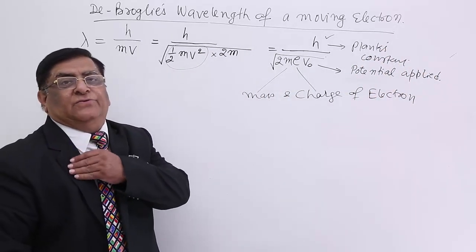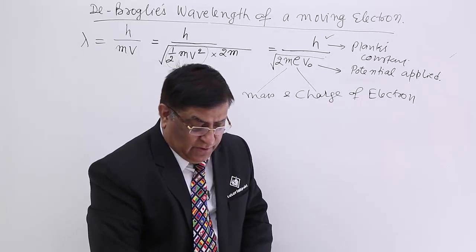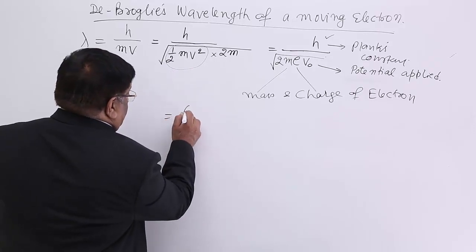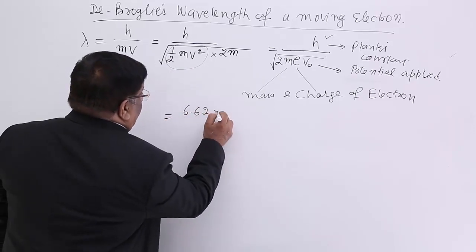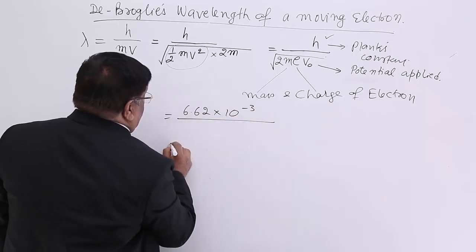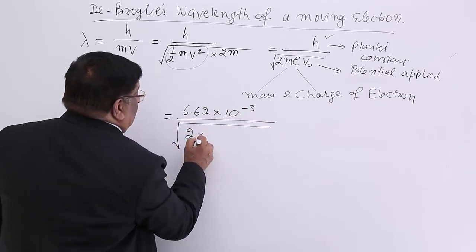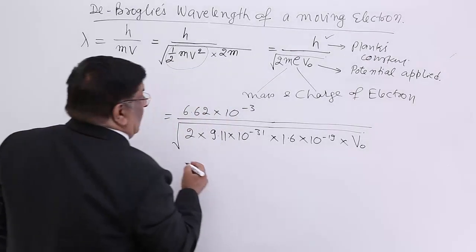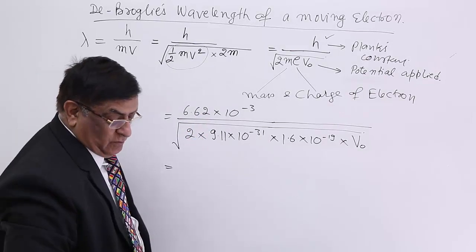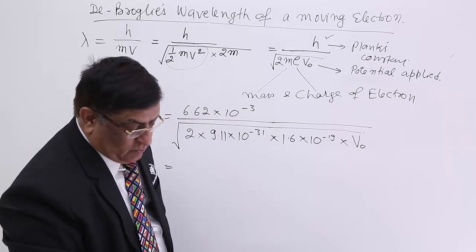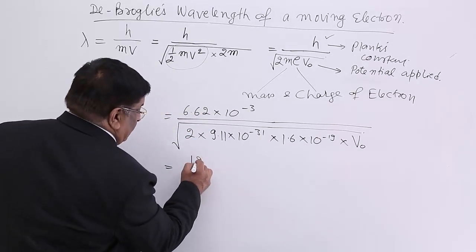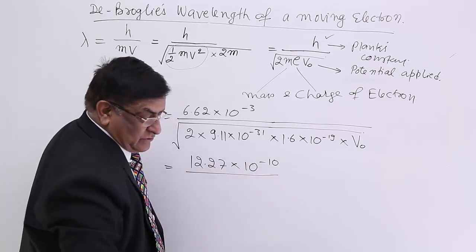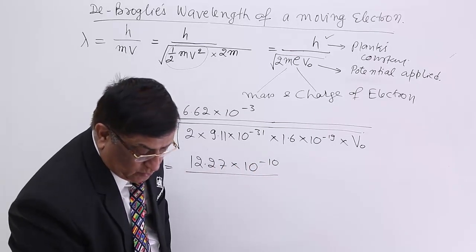Now we know the values of these constants and we put the values. Planck's constant is 6.62 × 10⁻³⁴. Under root 2 multiplied by mass of the electron, and when we solve all this, this comes to be 12.27 × 10⁻¹⁰ divided by √V.